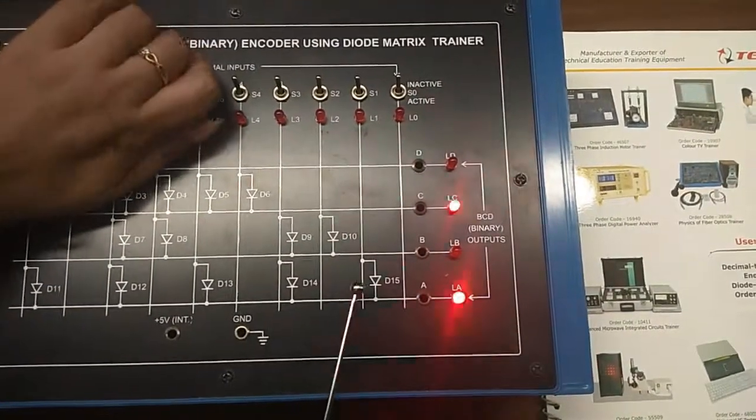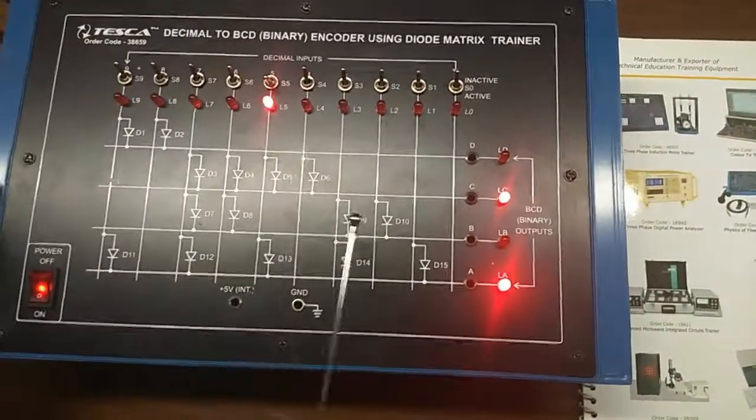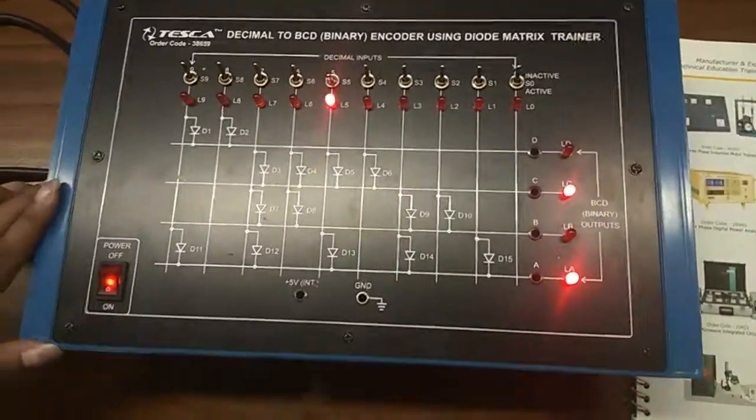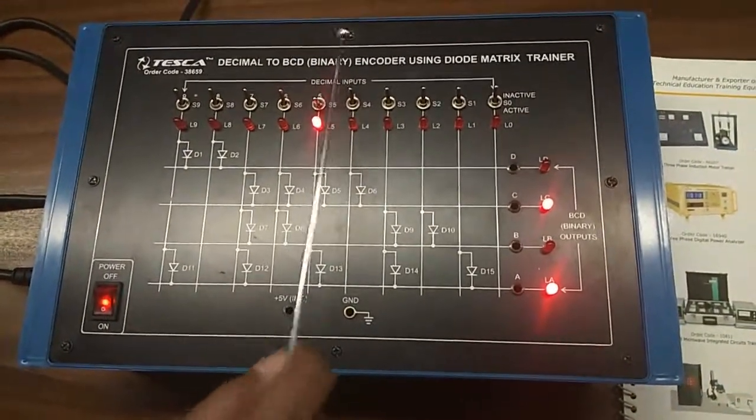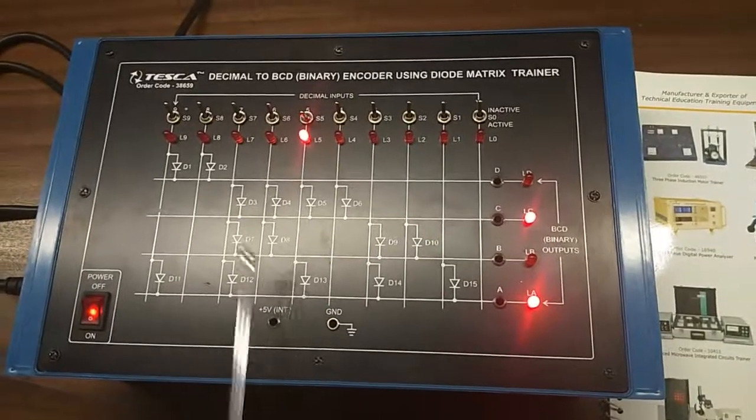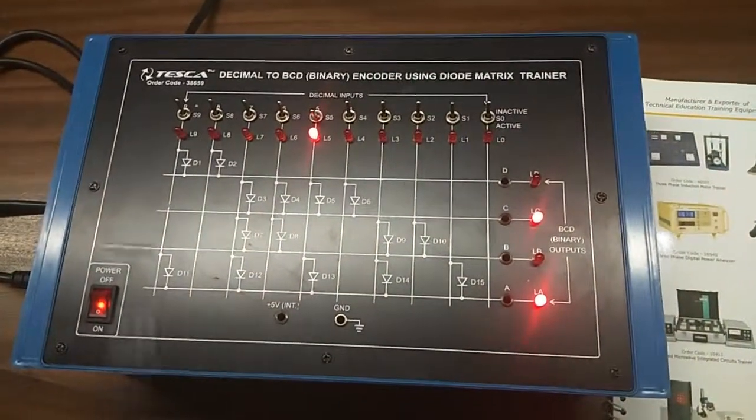This is S5. Here you can see that when we are giving input 5, D5 and D13 are in on position and they are giving logic 1.